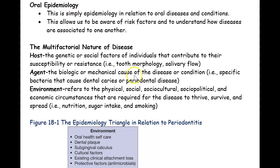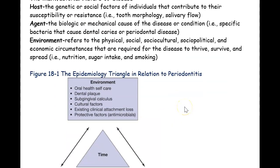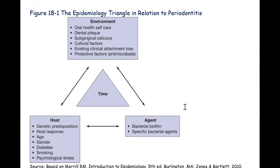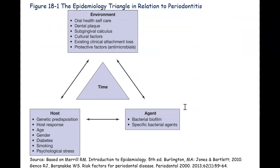We talked about how any disease is multifactorial — many factors play a role. Let's look at the multifactorial nature of periodontitis and bone loss. There are many factors in play: the environment — what is the person's oral health self-care like? Do they have good or bad oral hygiene, lots of plaque or little plaque, lots of subgingival calculus or none?